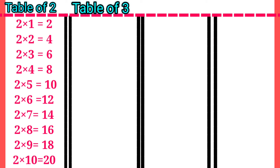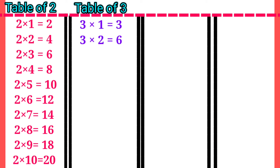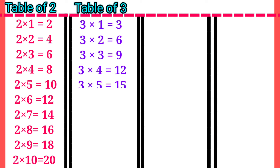Table of 3: 3×1=3, 3×2=6, 3×3=9, 3×4=12, 3×5=15, 3×6=18.